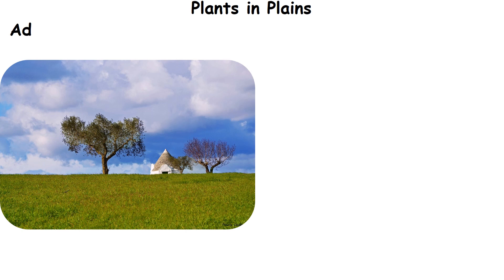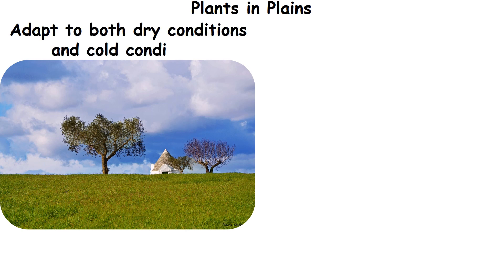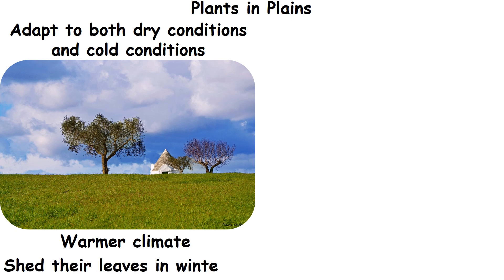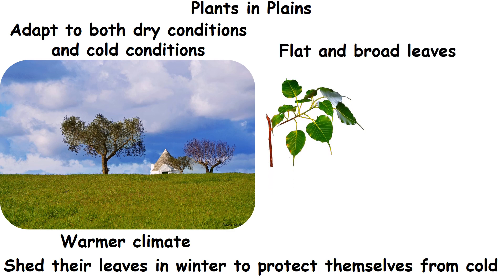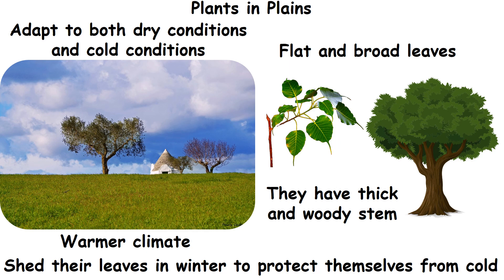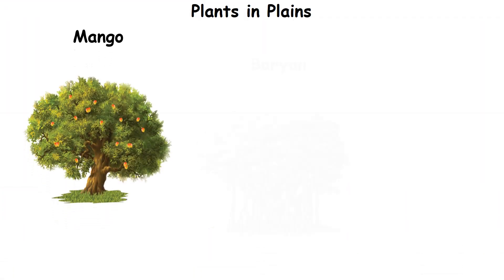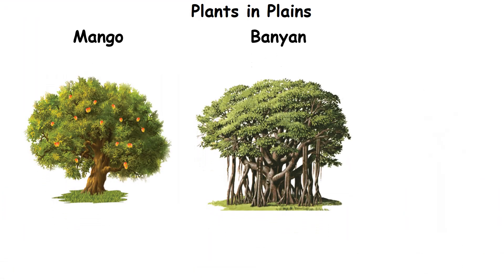Plants in plains. These plants need to adapt to both dry and cold conditions. They grow in warmer climate and usually shed their leaves in winter to protect themselves from cold. They have flat and broad leaves. They have thick and woody stem. Example: mango, banyan and teak.